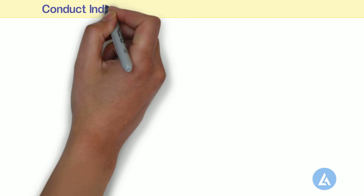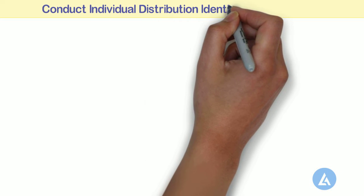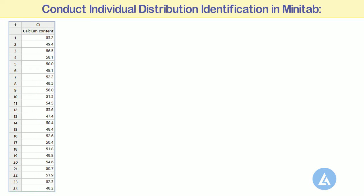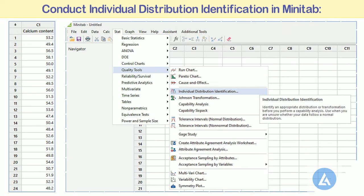To conduct an Individual Distribution Identification in Minitab, please follow the steps. Step 1: Enter or copy the data for calcium content into the Minitab worksheet in column form, as shown in the picture. Step 2: Select Stat, then Quality Tools, and then Individual Distribution Identification.